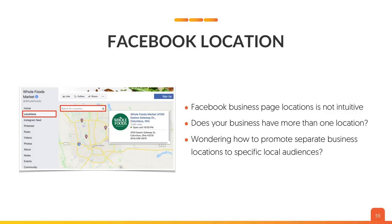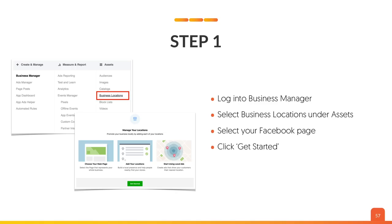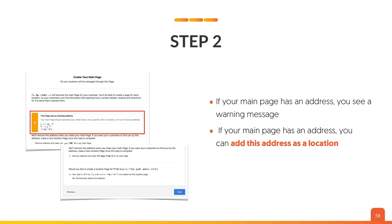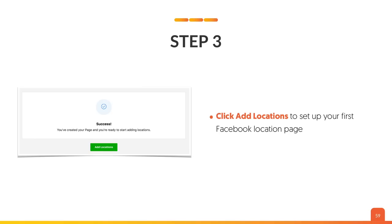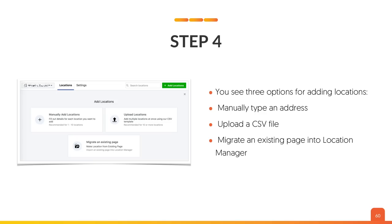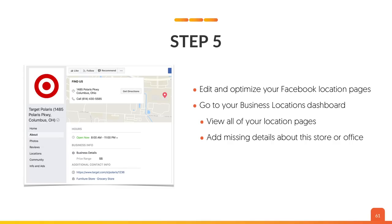But wait, there's more. With Facebook, there's also a location feature. Facebook business page locations is not intuitive. Does your business have more than one location? Wondering how to promote separate businesses to a local audience? Step one: log into Business Manager, select Business Locations under Assets, select your Facebook page, and click Get Started. Step two: if your main page has an address, you'll see a warning message — you can add this address as a location. Step three: click Add Locations to set up your first Facebook page location. You'll see three options: manually type an address, upload a CSV, or migrate an existing page into Location Manager. Step five: edit and optimize your Facebook location pages — go to your Business Locations dashboard where you can view all your location pages and add any missing details like a store or office.